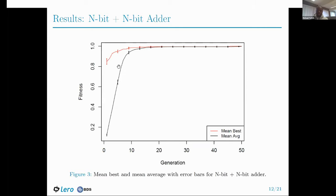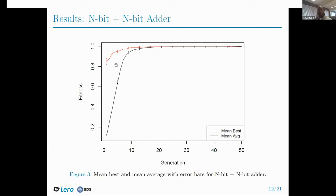For the adder results, similarly we have the mean best across generations in red and the mean average in black. We observe that the mean best fitness starts from around 0.81 from the initial generations, while the mean average starts from around 0.1, then rises rapidly during the initial generations. The mean best slowly increases as the evolution progresses. We also see the error bars shortening as the evolution progresses, indicating less variability between the fitness values of these individuals.